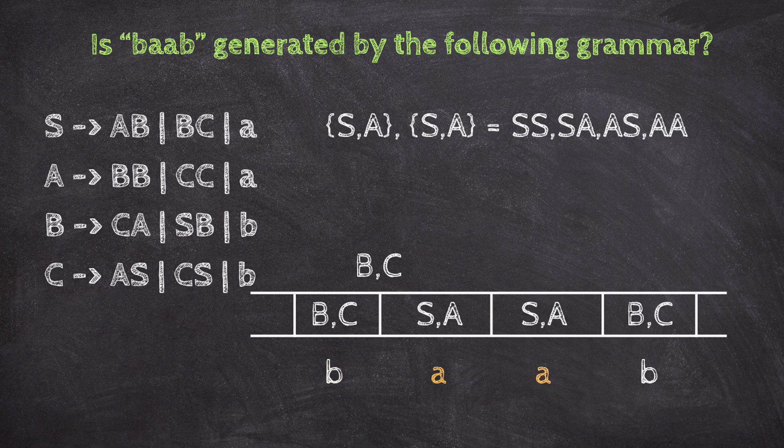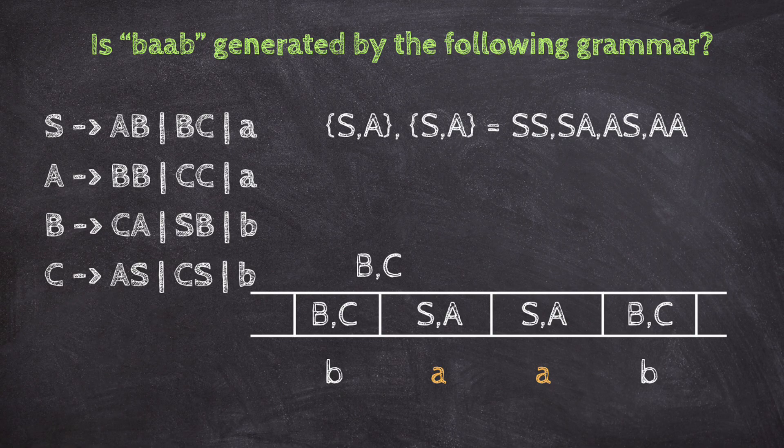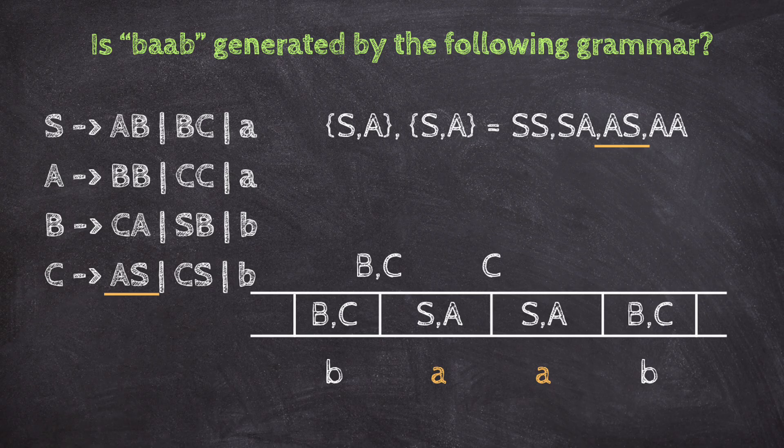Next, for AA, S, A from the first A, and S, A from the second A, combine to SS, SA, AS, and AA. Checking the rules, C goes to AS, so we write C. Nothing else matches, so only C goes above AA.